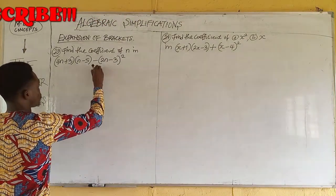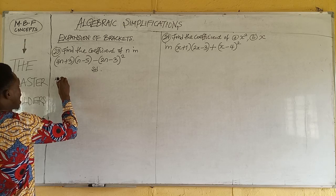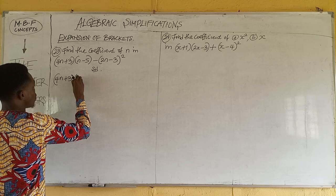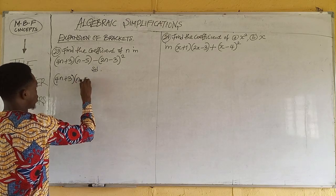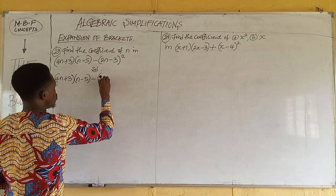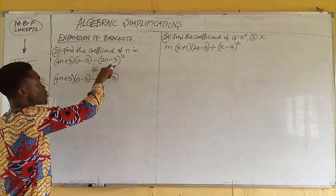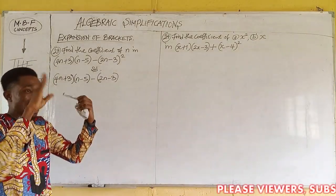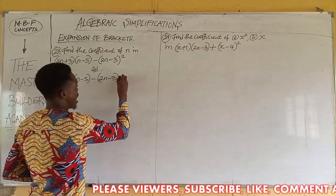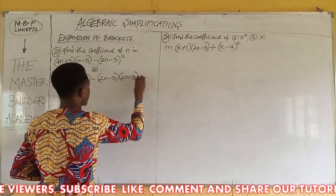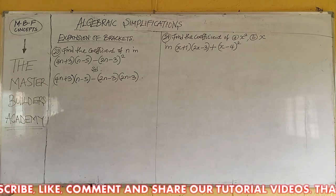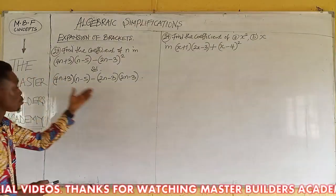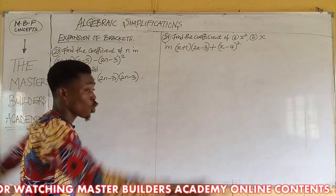Here is the solution. We have 4n + 3, open bracket, n minus 5, close bracket, minus 2n minus 3. And we said that the bracket (2n minus 3) all squared means 2n minus 3 multiplied by another 2n minus 3. So we write: 4n + 3, open bracket, n minus 5, close bracket, minus open bracket, 2n minus 3, close bracket, times open bracket, 2n minus 3, close bracket.